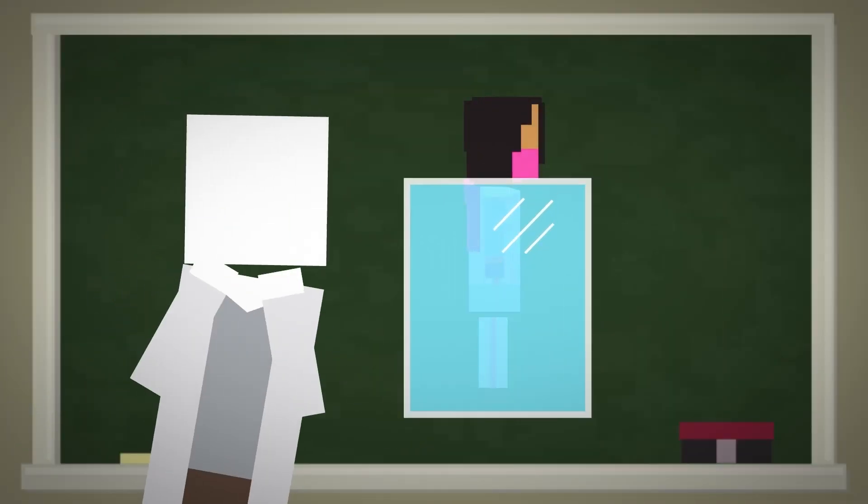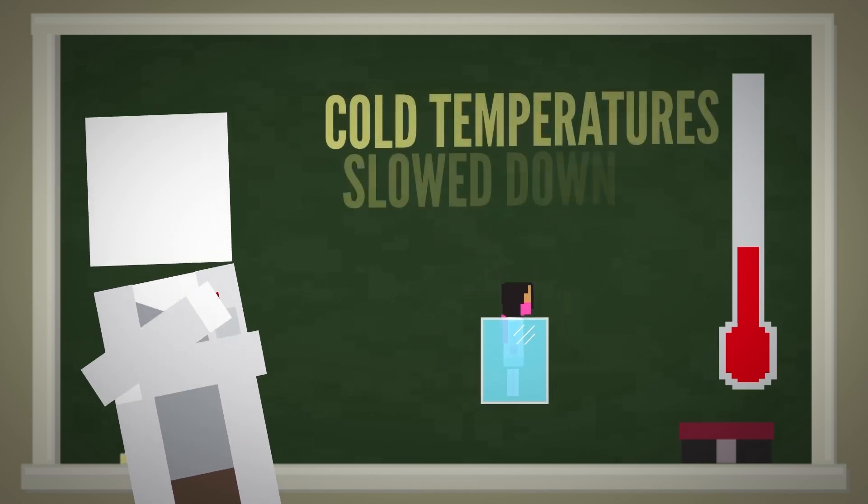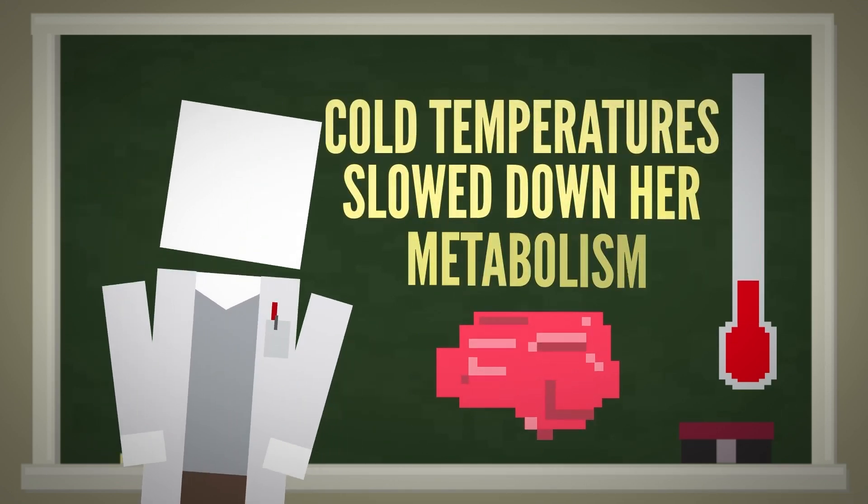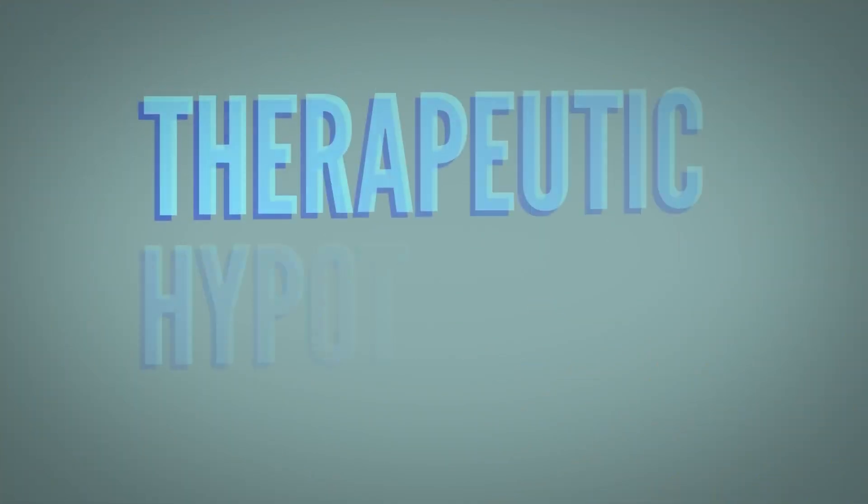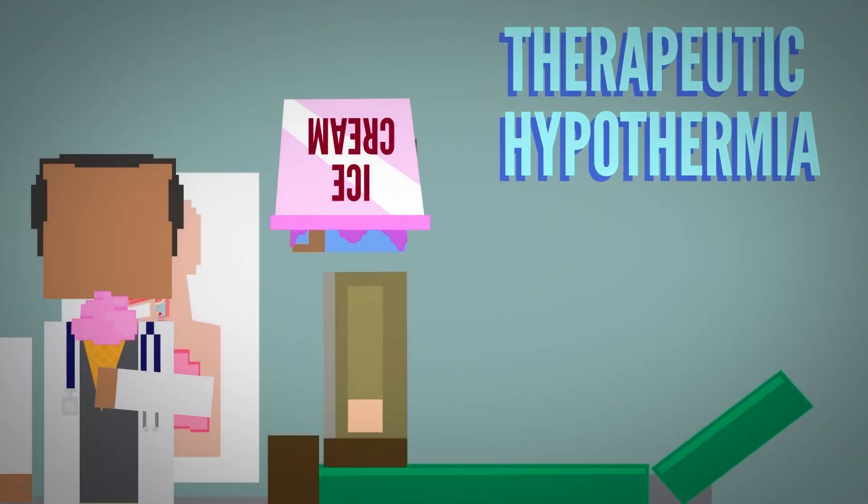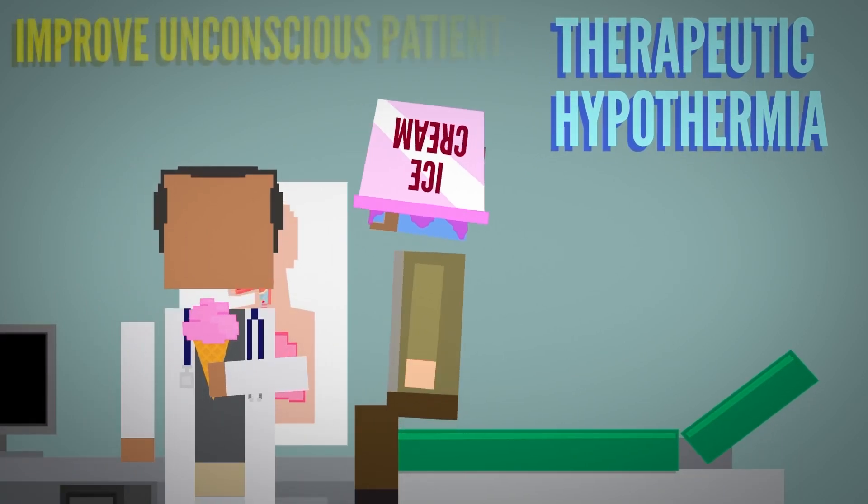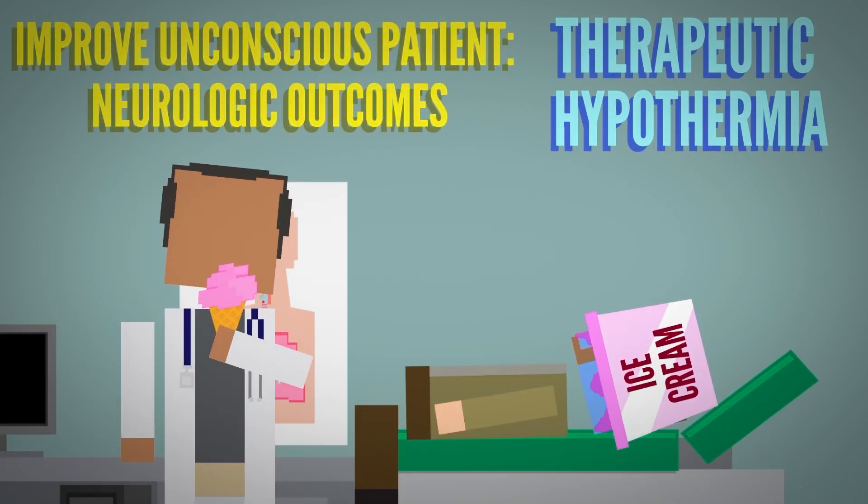Oddly enough, being frozen alive is what saved her. The cold temperatures slowed down her metabolism, so her brain didn't need as much oxygen to survive. Nowadays, this is known as therapeutic hypothermia, and doctors actually do this on purpose to improve their unconscious patients' neurological outcomes.